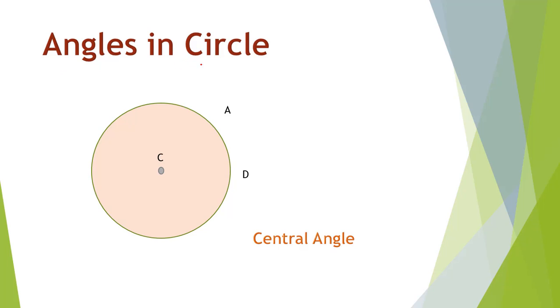Angles in circle. Central angle is an angle between two radii in a circle. An arc is a portion of a circle circumference between two points. This red part is an arc. This arc can be named AD or DA. The order doesn't matter. An arc's measure is the measure of its central angle.